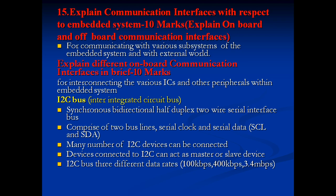Next: explain the communication interfaces with respect to embedded systems. You have to explain both onboard and external communication interfaces for 10 marks. Starting with I2C bus — Inter-Integrated Circuit bus — it is a synchronous, bidirectional, half-duplex, two-wire serial interface. It is synchronous, so it sends clock signals for communication. Half-duplex means you cannot transmit and receive at the same time. It has two bus lines: Serial Clock (SCL) and Serial Data (SDA).